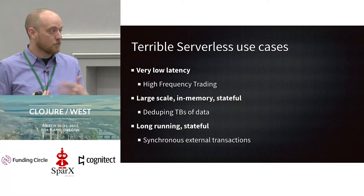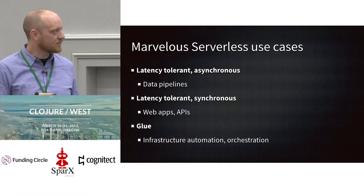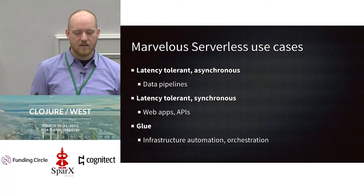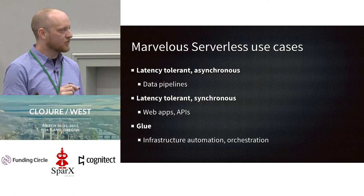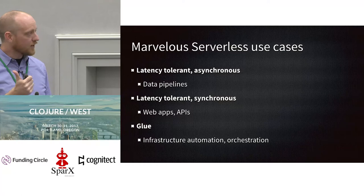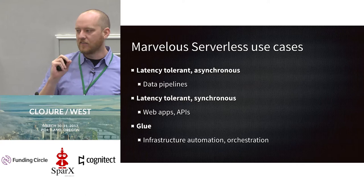On the flip side, what are some marvelous serverless use cases? I've had quite a successful experience building a system using AWS Kinesis and Lambda to do billions of events a day, terabytes of data. The attributes that made this successful with a serverless architecture were that it was tolerant to some latency and it was asynchronous — data coming in, being processed through a pipeline and eventually ending up in a storage system. When I say latency tolerant, I don't mean latency of minutes — I mean tens or hundreds of milliseconds being acceptable.